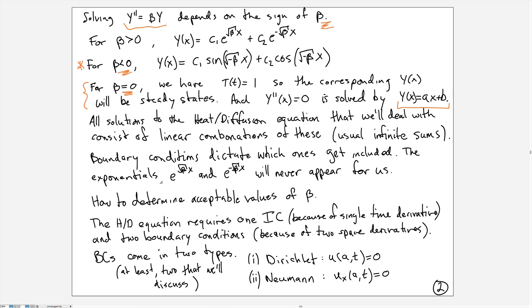How do we choose these values of β? It's the boundary conditions that tell us what values of β are going to be used. Like I said before, the exponential ones will never really be that useful because of the types of boundary conditions we're going to be dealing with.